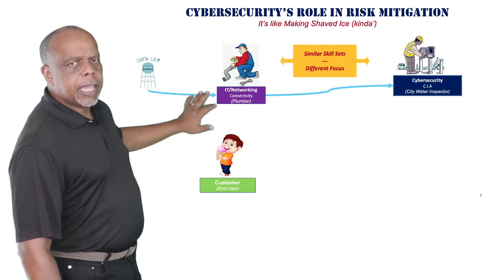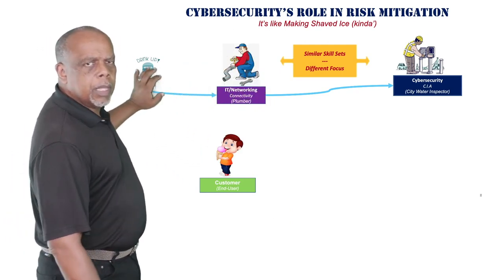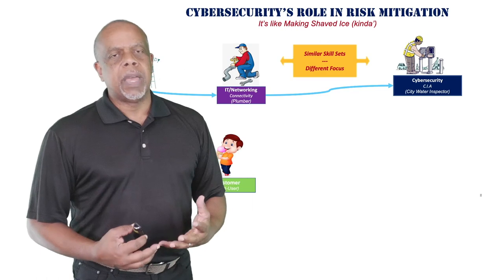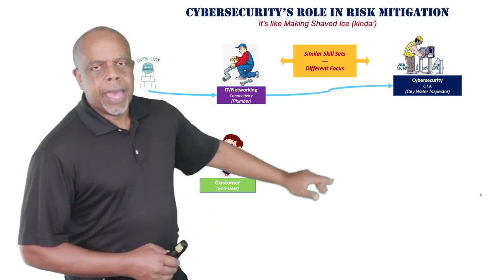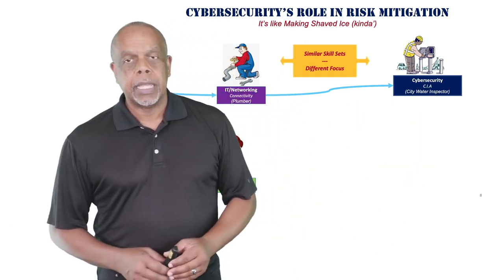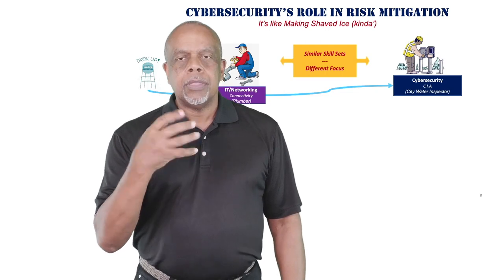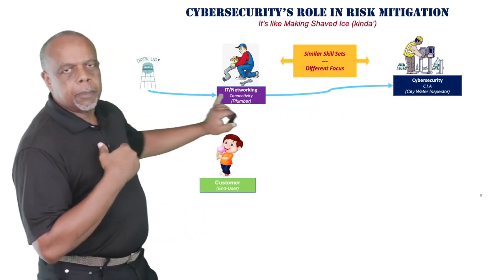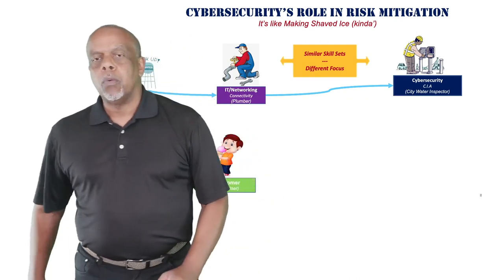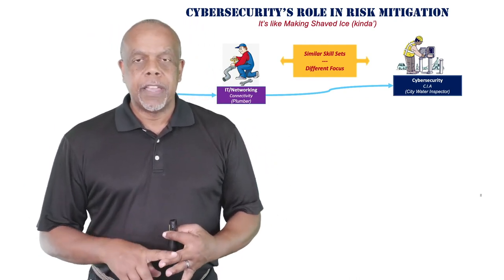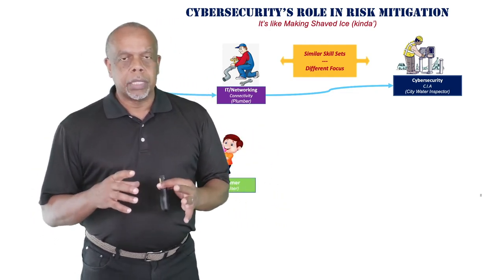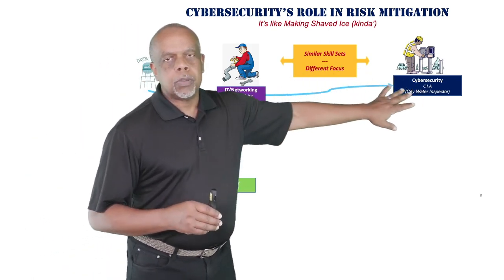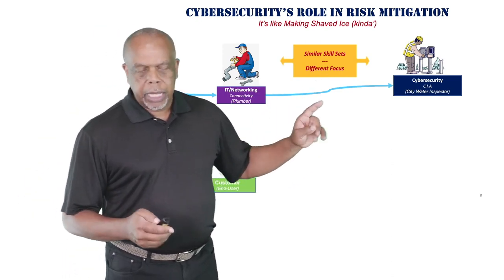The plumber is excellent at connecting pipes and getting water into your building, but if you ask him about rust content or pH balance, he probably can't tell you. That's what the city water inspector is concerned about — the quality of the water. From a cybersecurity perspective, yes, we work closely with IT to get information from point A to point B, but we want to ensure the confidentiality, integrity, and availability of that information. Similar skill sets — different focus.